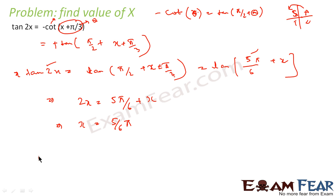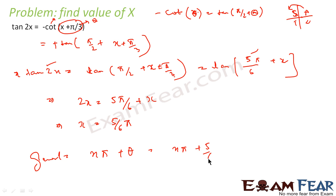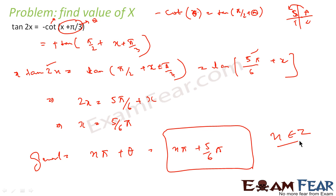Now for the general solution, since this is tan, the general form is nπ + θ, and θ is 5π/6. So x = nπ + 5π/6, where n is a member of Z — please don't forget this. What we have done: we converted cot into tan, equated both sides to get the principal solution, and then found the general solution.